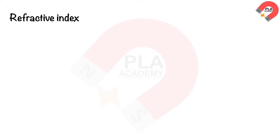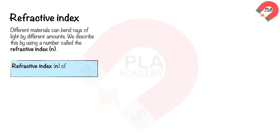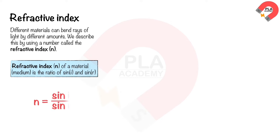Refractive index. Different materials bend rays of light by different amounts, described by the refractive index, n. The refractive index of a material is the ratio of sin i to sin r: n = sin i / sin r, where i is the angle of incidence and r is the angle of refraction. The refractive index has no unit. The refractive index in air is approximately equal to 1.